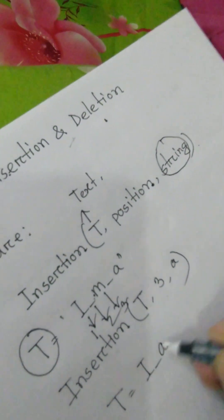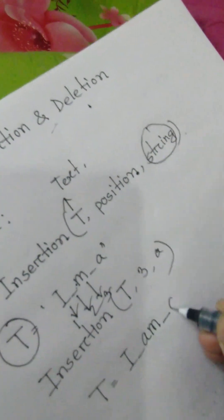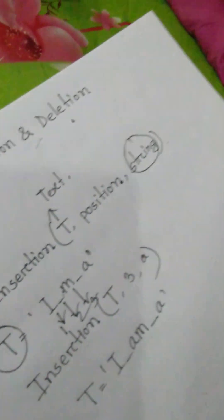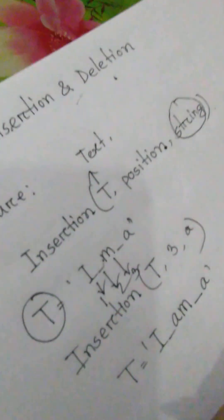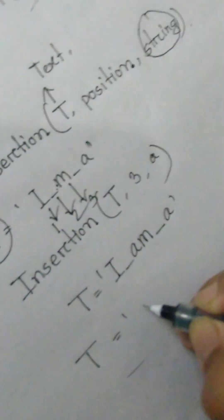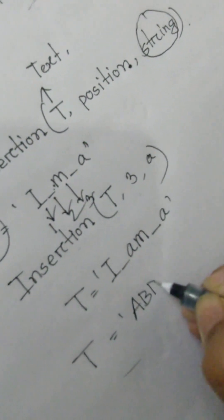This is the final string. Another example is T equals to A B B.